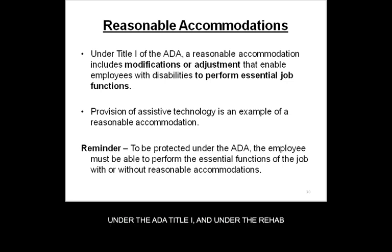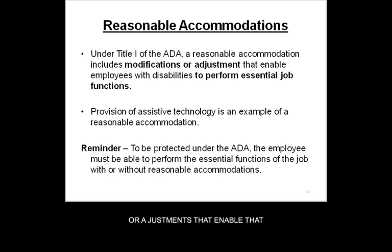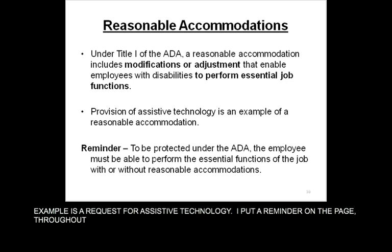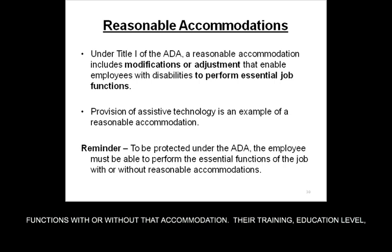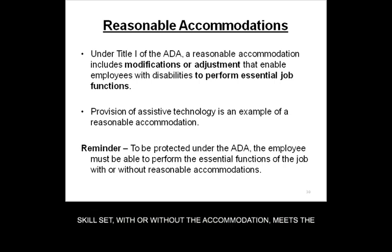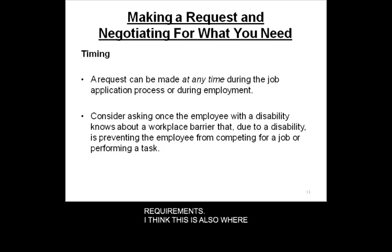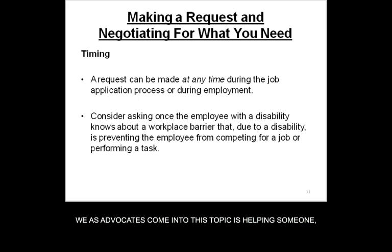Under the ADA Title I — and therefore also under the Rehab Act — a reasonable accommodation includes modifications or adjustments that enable the employee with a disability to perform their essential job functions. An example would be a request for a type of assistive technology. Throughout all of this, we have to keep in mind that the applicant or employee meets the essential job functions — their training, education, skill set — with or without that accommodation. This is also where we as advocates potentially come in, helping someone and troubleshooting the actual request for the accommodation.